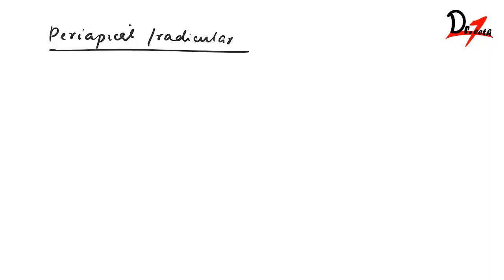This periapical cyst or radicular cyst has a few other names like the apical periodontal cyst or the root end cyst. The first question is, how does it occur?